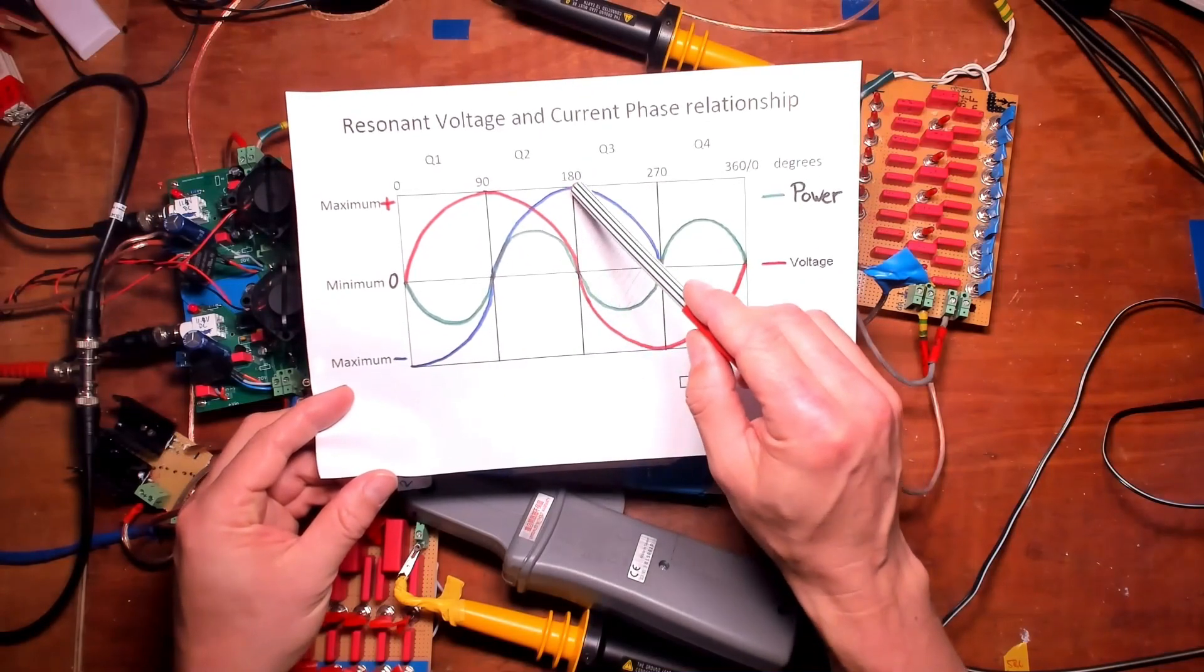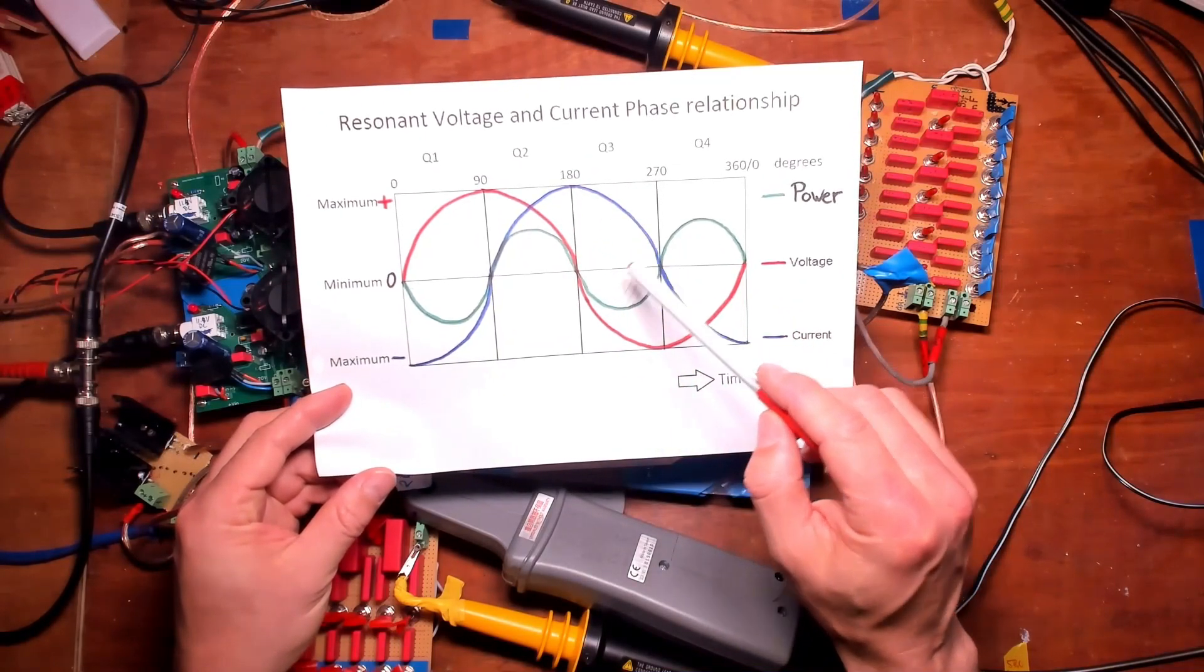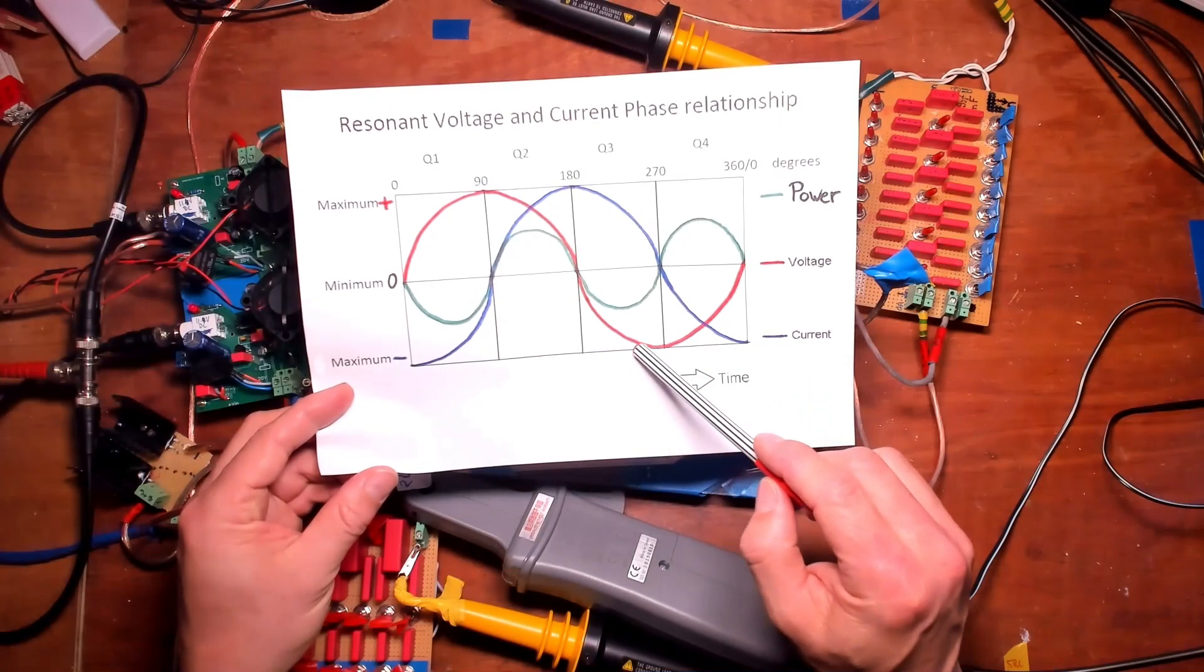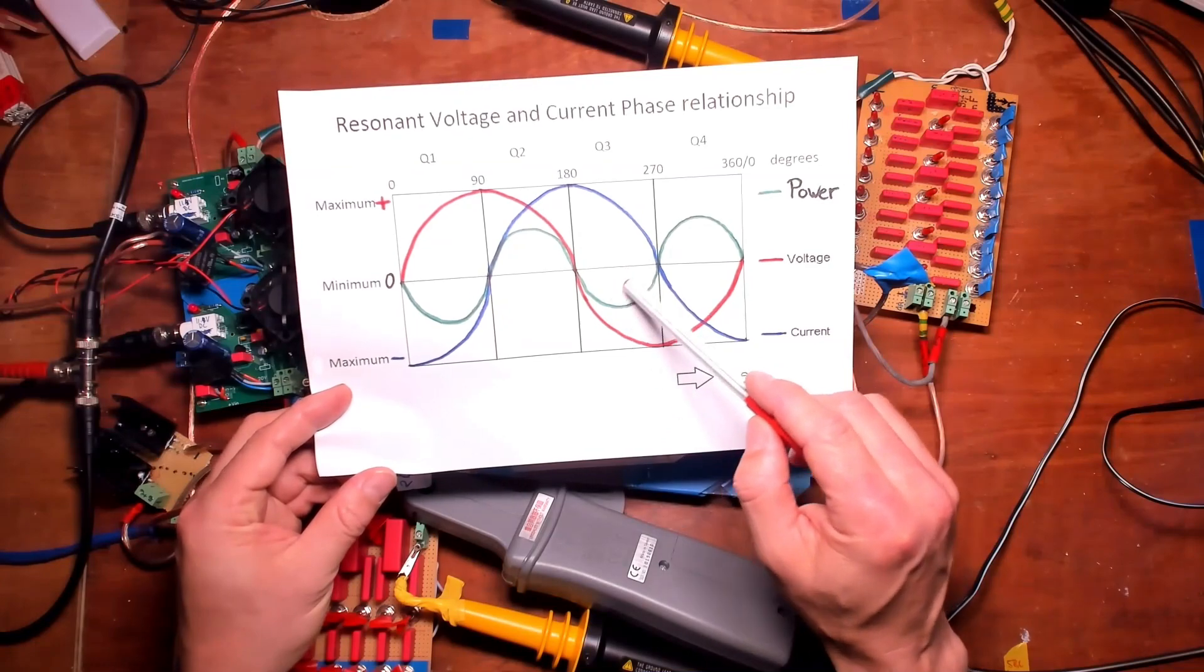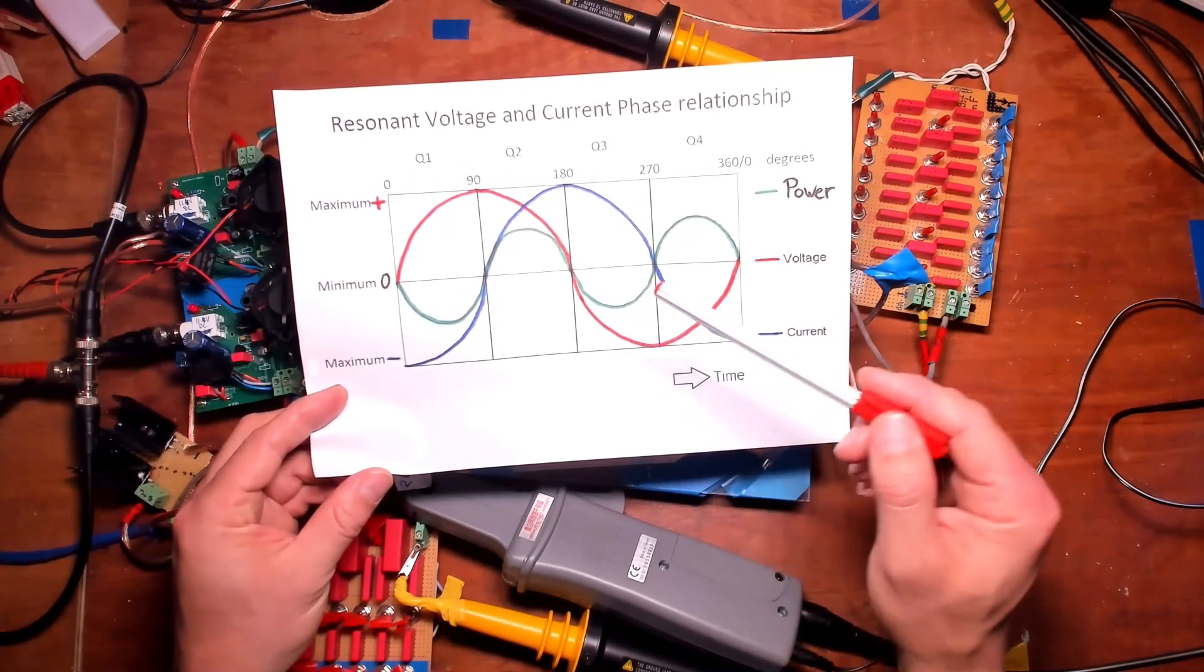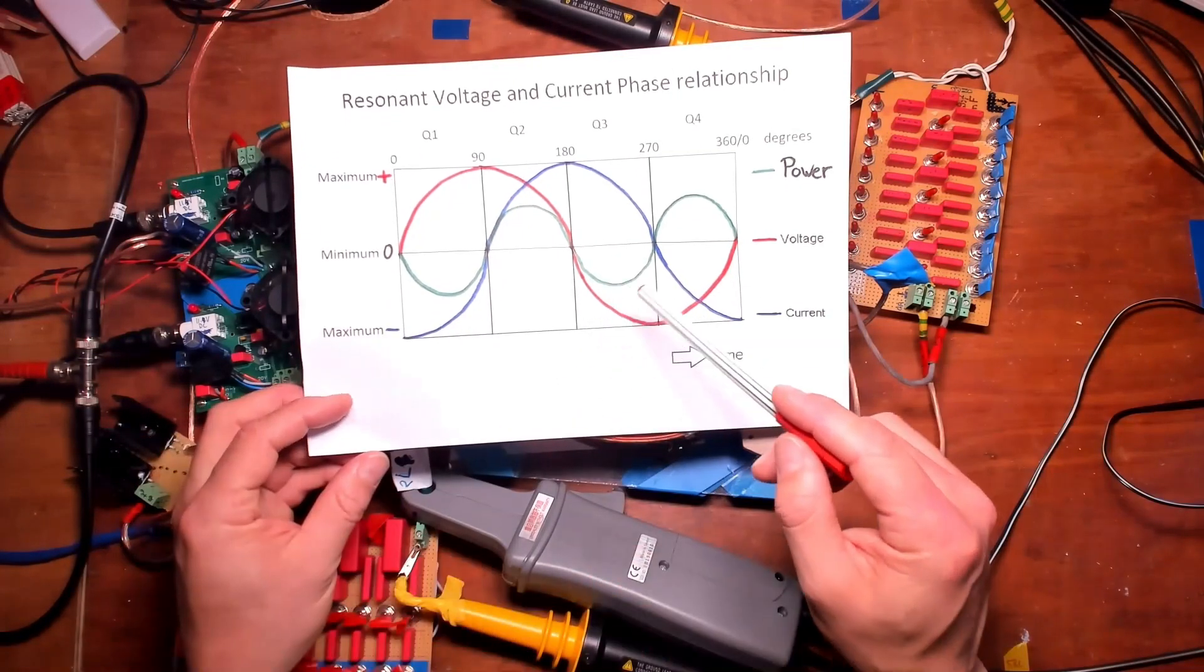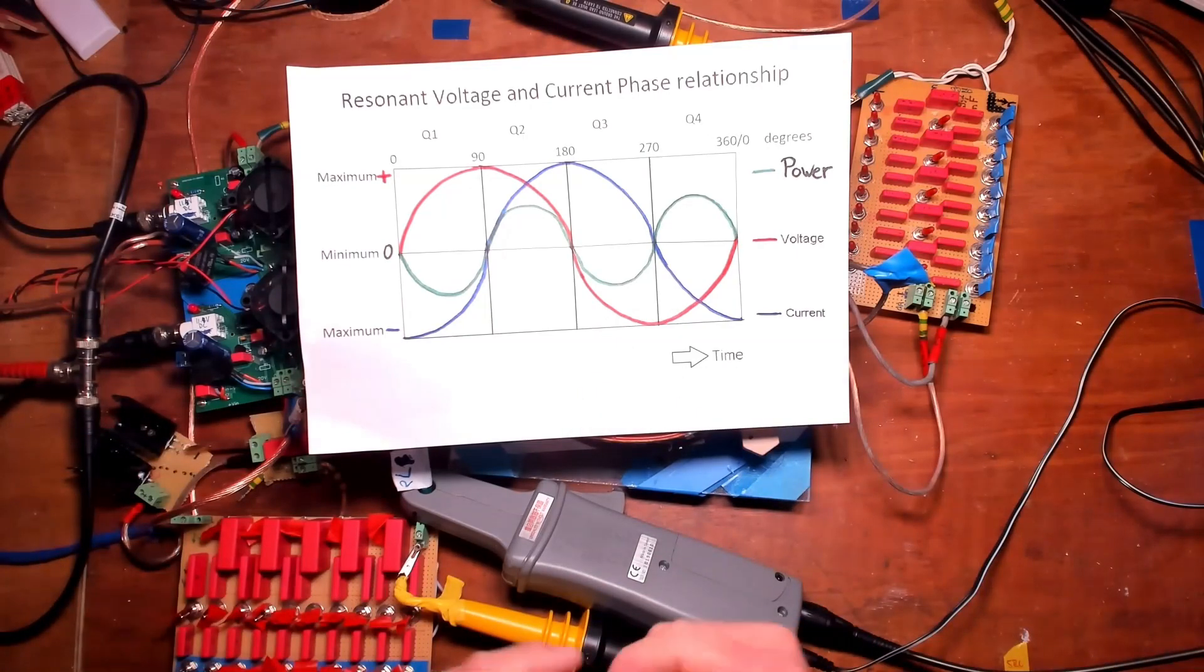And again here the current is discharging. The capacitor is being charged to its negative maximum, so we have a negative power cycle. So each time the coil is charging up the capacitor we have a negative power cycle.